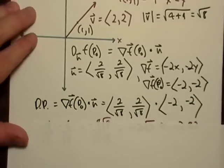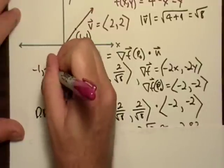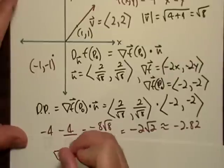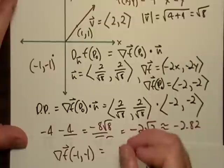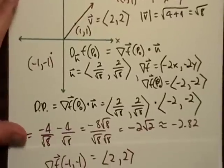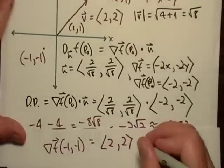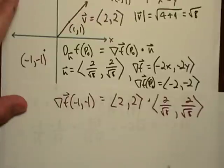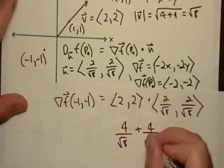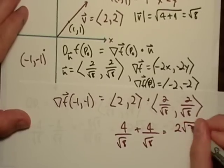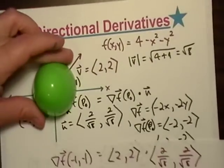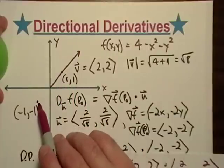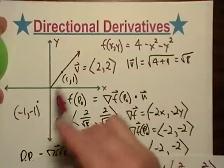Likewise, if I took the derivative at (-1, -1), I should get a positive number. The gradient of F at (-1, -1) would be (2, 2). Dotting that with the unit vector gives 4/√8 plus 4/√8, which is exactly the opposite result. That makes sense because this is a symmetrical function — the gradient should be exactly opposite across the origin.